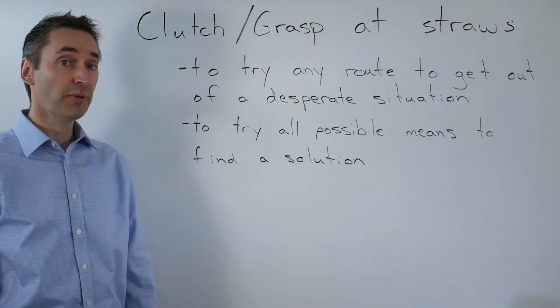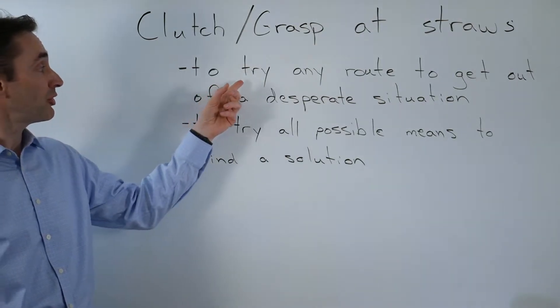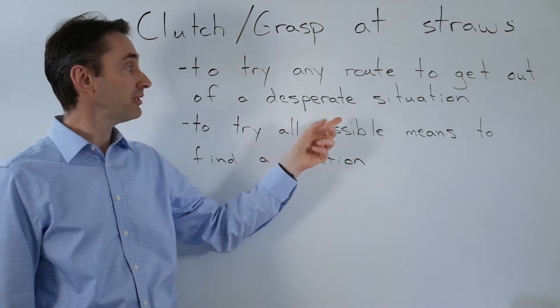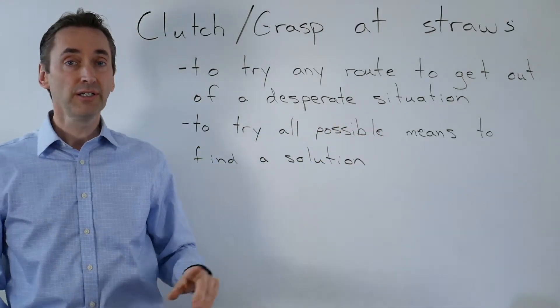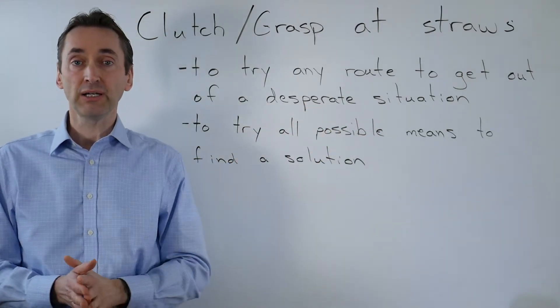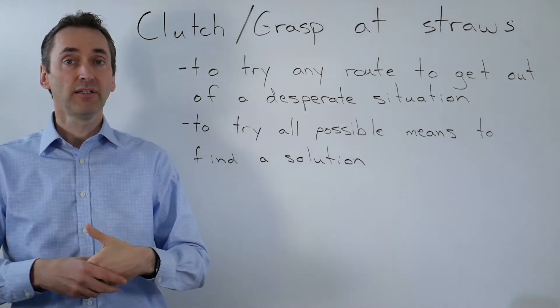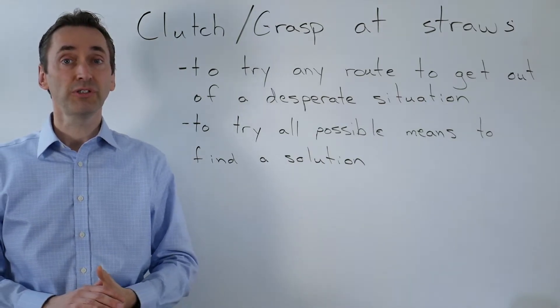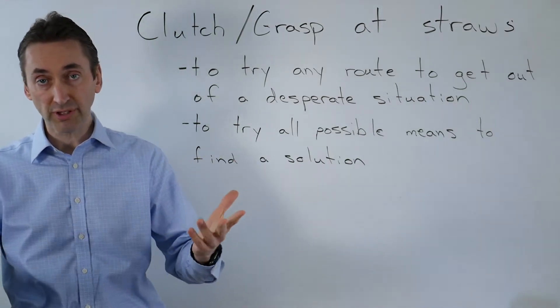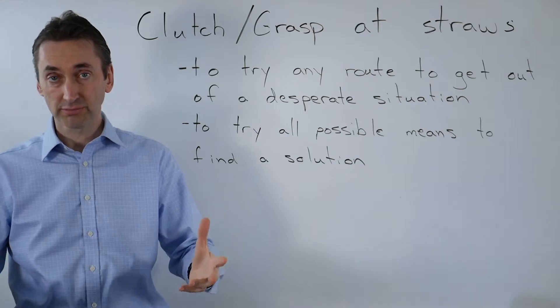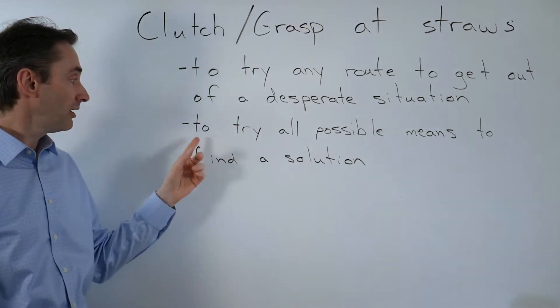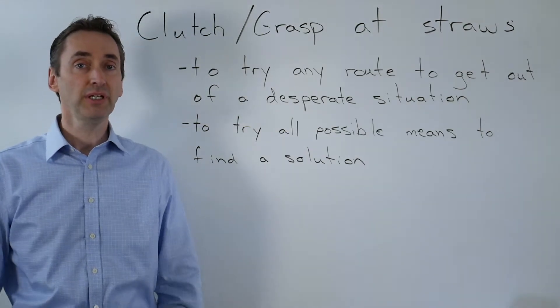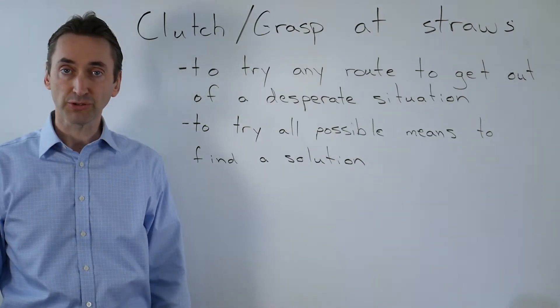Clutch or grasp at straws means to try any route to get out of a desperate situation. Desperate means a hopeless situation. Perhaps there's no way I can succeed in this situation. I will lose everything. I'm desperate. To try all possible means to find a solution are the meanings of clutch or grasp at straws.